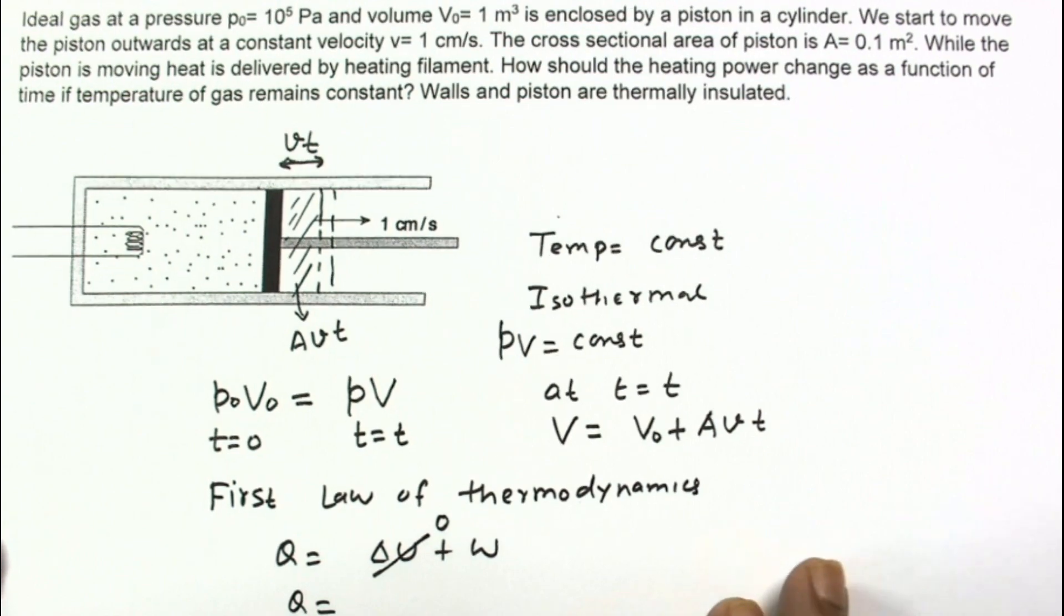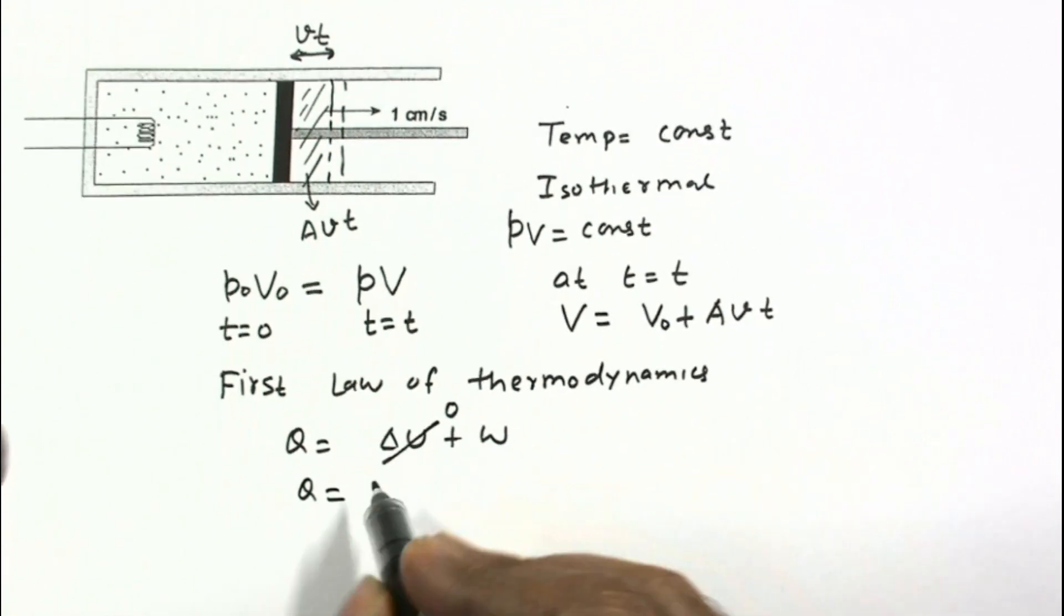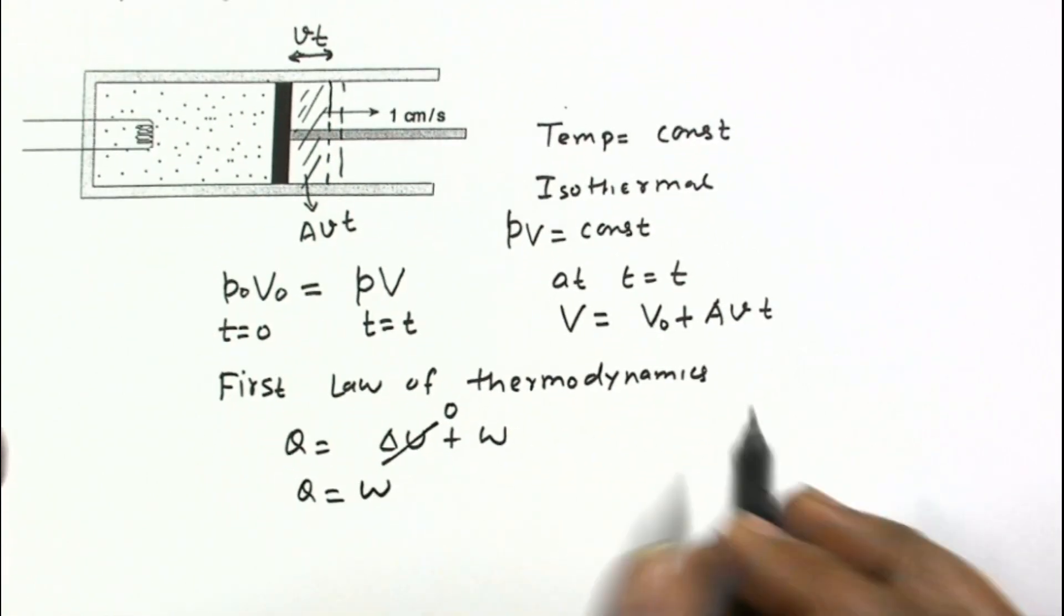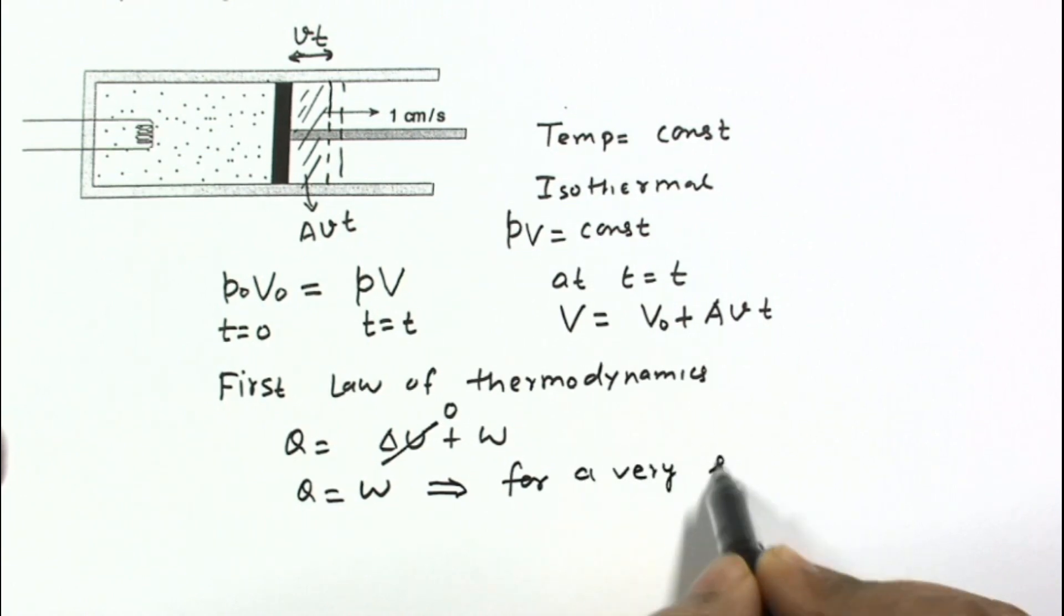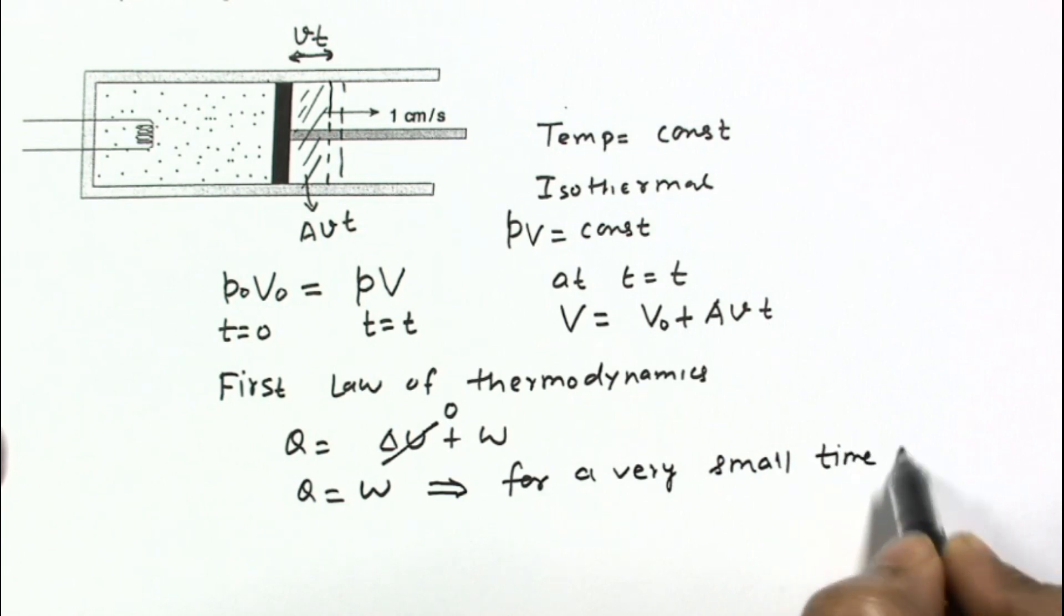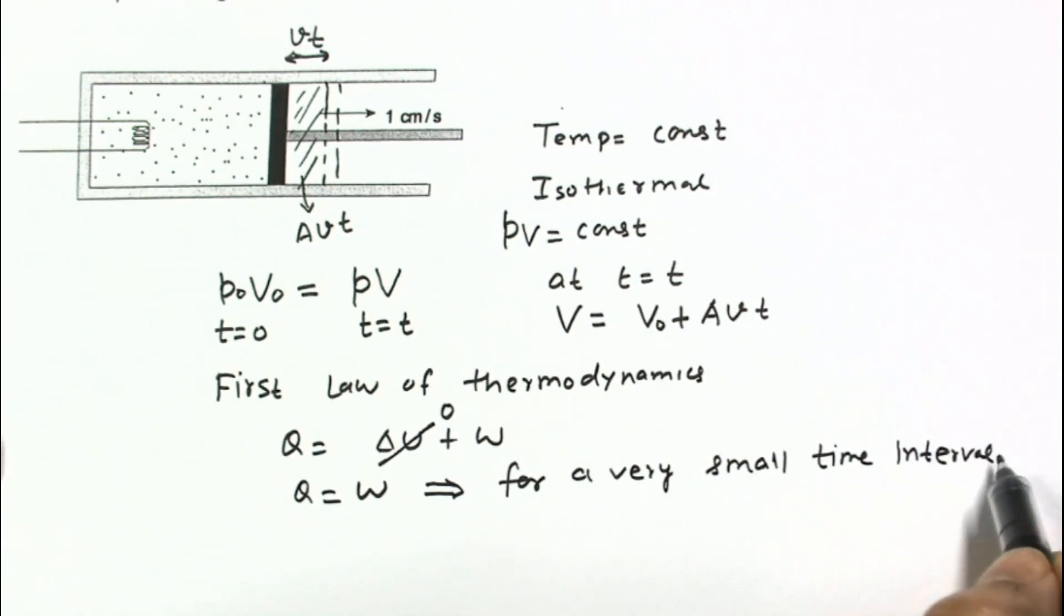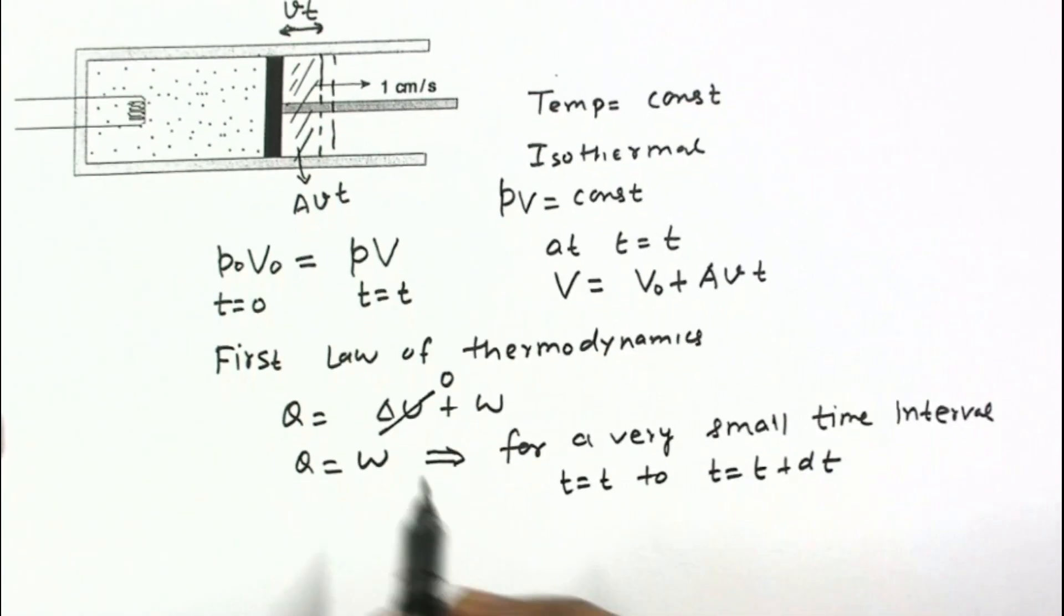I am applying this equation for a very small time interval, from T equals T to T equals T plus dT. And for this time interval, I can write dQ equals dW.